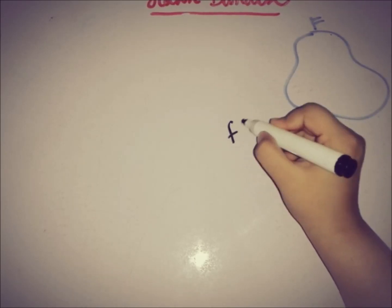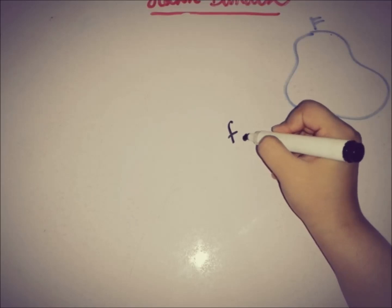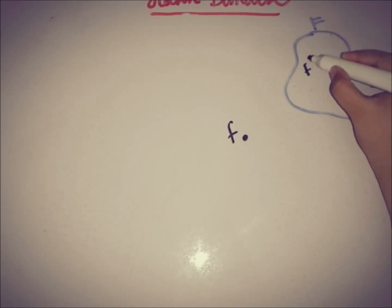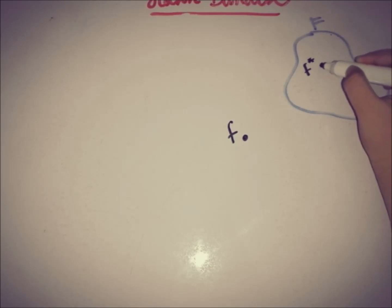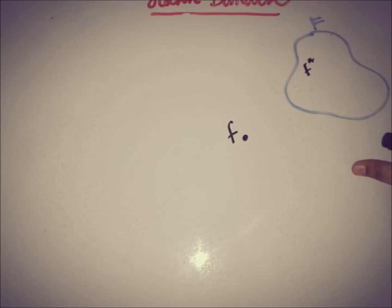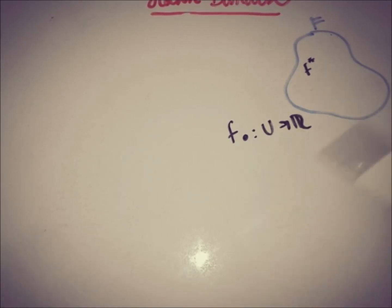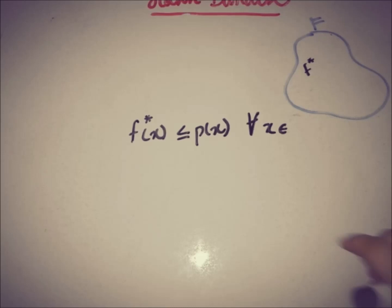Let F be the class of all possible extensions of the functional f₀ under consideration. Suppose f* is one of the extensions of f₀, since F is the class of all possible extensions of this functional from U to ℝ. So if f* is the extension functional of f₀, it must satisfy the majorization condition.